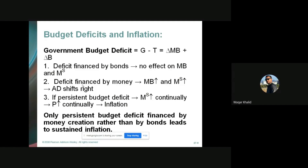The government also has these two options: it can raise revenue or borrow from the public or from international organizations and donor agencies. Specifically, the government can raise revenue by levying taxes, or go into debt by issuing government bonds. There is also a third option: money creation — the government can create money and use it to pay for goods and services it buys.